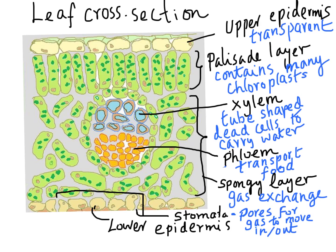The upper epidermis — the top layer of the leaf — is completely transparent to light. It serves as a protective covering for the rest of the leaf cells. Above that you also have the cuticle, which is a waterproof layer that prevents water from evaporating or escaping through the top of the leaf. The transparent upper epidermis allows maximum light to reach the cells below.